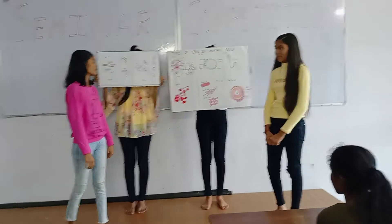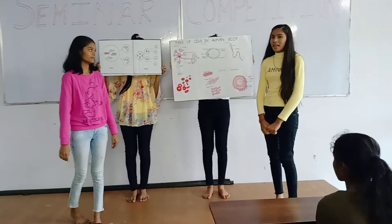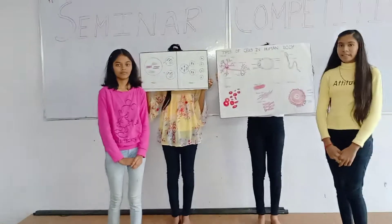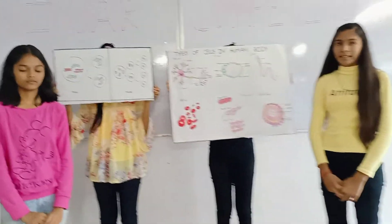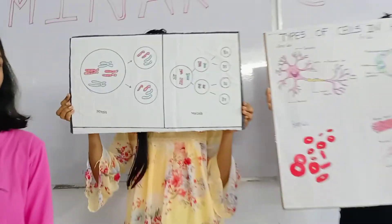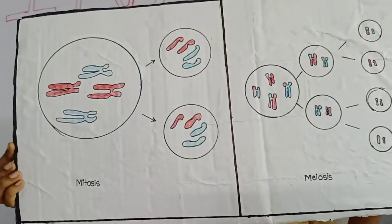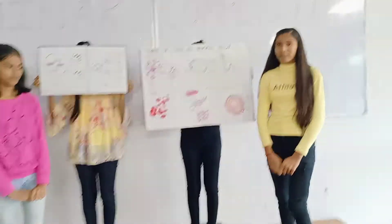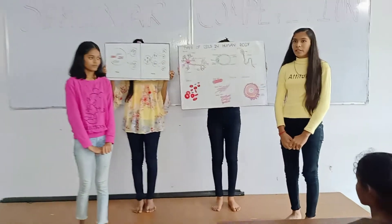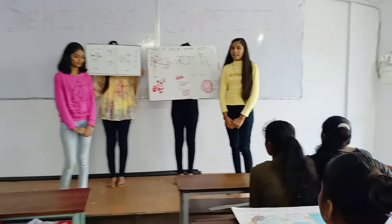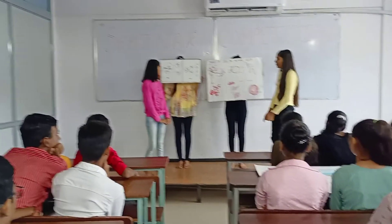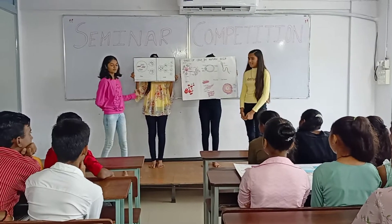Mitosis is the process of cell replication. It replicates its chromosomes and then divides, producing in the nucleus a division identical to the original cell. Mitosis generally results in two daughter cells that have identical genomes. Here is the diagram of mitosis.